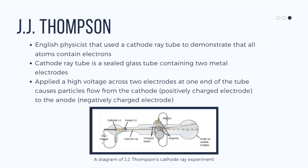So what is a cathode? A cathode is a positively charged electrode, and the anode is a negatively charged electrode. Where he saw the voltage and everything flowing, he realized that atoms contain electrons which are negatively charged.